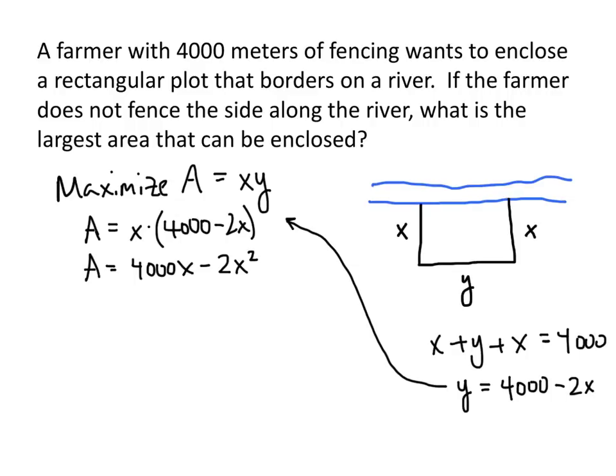So how do we find where this area is maximized? Well, you might notice that this area is a quadratic function. And if we were to graph this quadratic function, because the coefficient of x squared is negative, it's going to look like an upside-down parabola. And so the maximum area is going to happen at the vertex of this parabola.